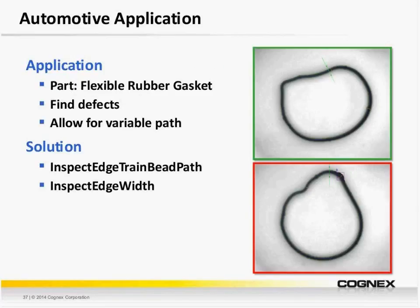When I first introduced the InspectEdge tool, I mentioned the option to train a bead path to account for variable position — this is an example of that. It's a flexible rubber gasket or large O-ring. Post-forming, we want to inspect on the fly that the gasket is fully formed and that its width is within spec. But because it's flexible, the shape can vary. With our InspectEdge trained bead path tool, we can account for variation in location and path to still find the edges and inspect the part.